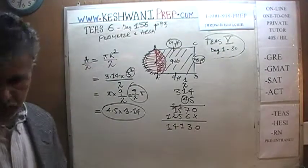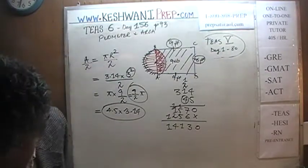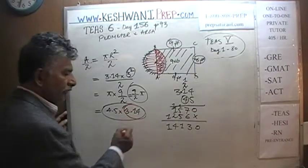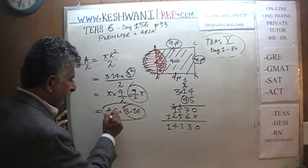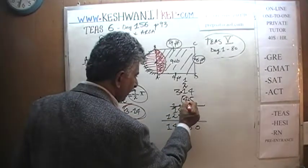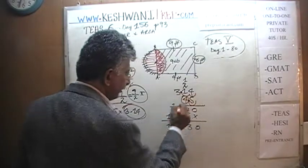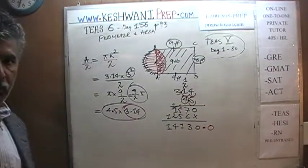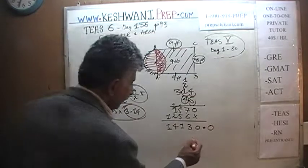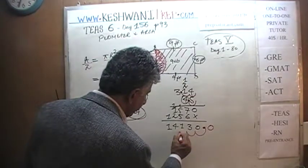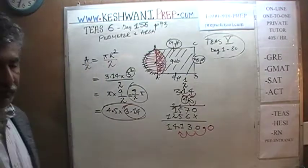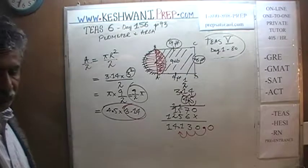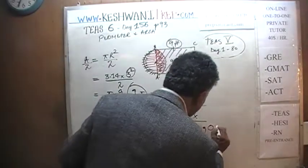Now the decimal: 3.14 has two decimal places and 4.5 has one decimal place — altogether three decimal places. The decimal is currently at the very end, so we move it three places to get 14.14. That is 14.14 square feet — the area of half the circle.